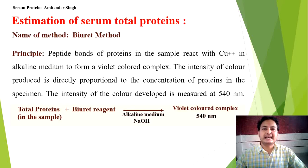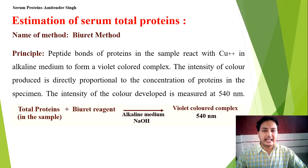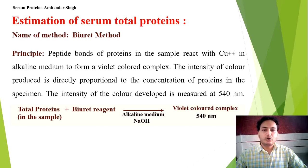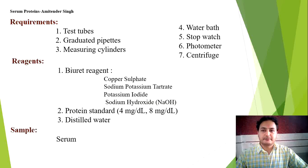Now, how do we estimate total serum proteins? The method used is the biuret method. Its principle is that the peptide bonds of proteins react with cupric ions in an alkaline medium and form a violet-colored complex. The intensity of this violet color is directly proportional to the concentration of proteins in the sample, and it is measured at 540 nanometers.